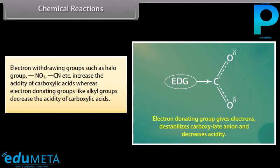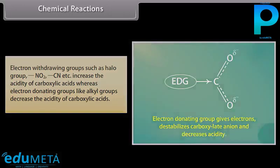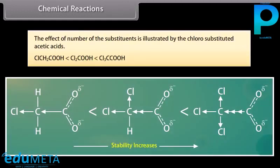Electron-withdrawing groups such as halo, NO2, CN, etc., increase the acidity of carboxylic acids, whereas electron-donating groups like alkyl groups decrease the acidity. The effect of number of substituents is illustrated by the chloro-substituted acetic acids: acid strength increases from chloroacetic acid to trichloroacetic acid.